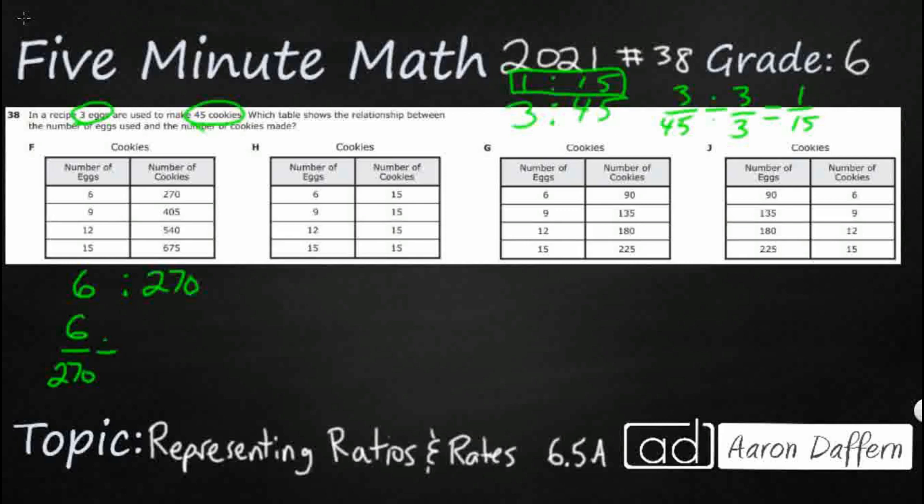I'm going to reduce. I'm not sure if 6 goes into it, so let me just, I know they're both even. Let me just start with at least even. I can go with 2. So 3 goes into 135.